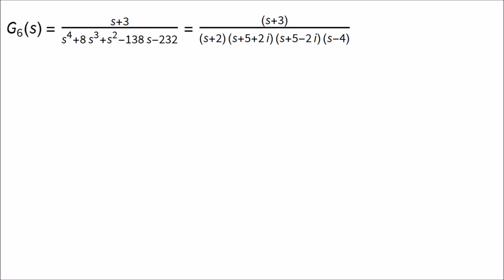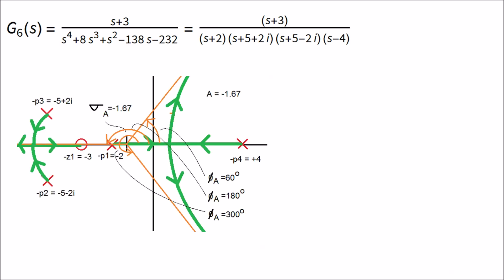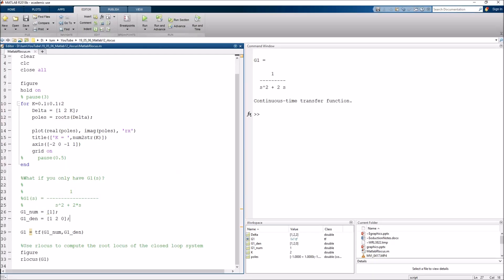Here's another transfer function — G6 — that we looked at in our previous lecture. It had one zero and four poles, and from the previous video we made a rough sketch of the root locus, which had three asymptotes going to zeros at infinity in a particular configuration. It took about 5 to 10 minutes to calculate all the parameters and make that sketch. Can we do this faster in MATLAB, or at least validate the sketch? Absolutely — let's continue using rlocus.